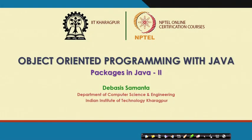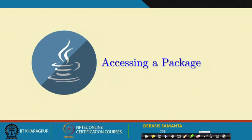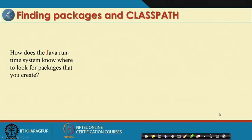We are discussing packages in Java. In the last module we introduced the concept of packages — how the built-in API packages are there in Java JDK and how a user can define their own package. Today we will discuss much more information about Java packages, specifically regarding access, maintaining, and specification — mainly how a package can be accessed and how different access specifications work in the context of packages.